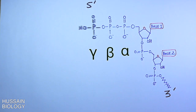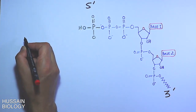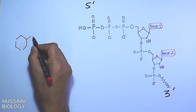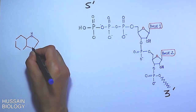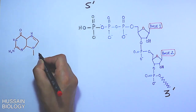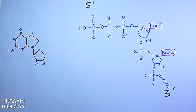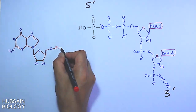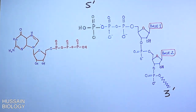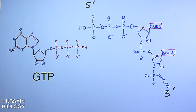To drive the mRNA capping process, we need the reactant GTP — guanosine triphosphate — which has guanine attached to a sugar bearing three phosphates, also referred to as alpha, beta, and gamma phosphate, as shown in the diagram.